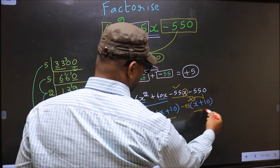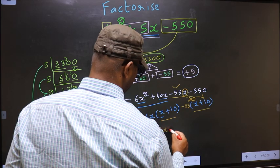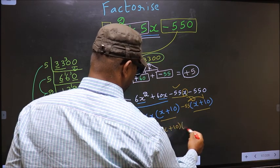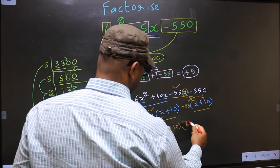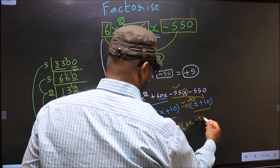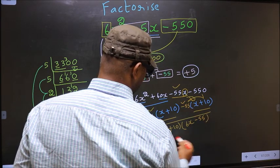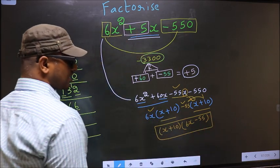Now you take out x plus 10 common. So here you have 6x and here minus 55. This is our answer.